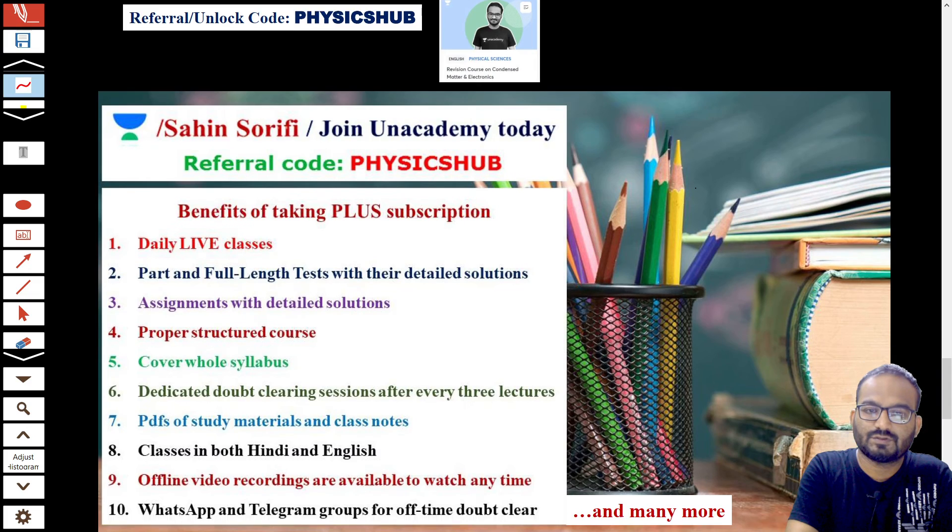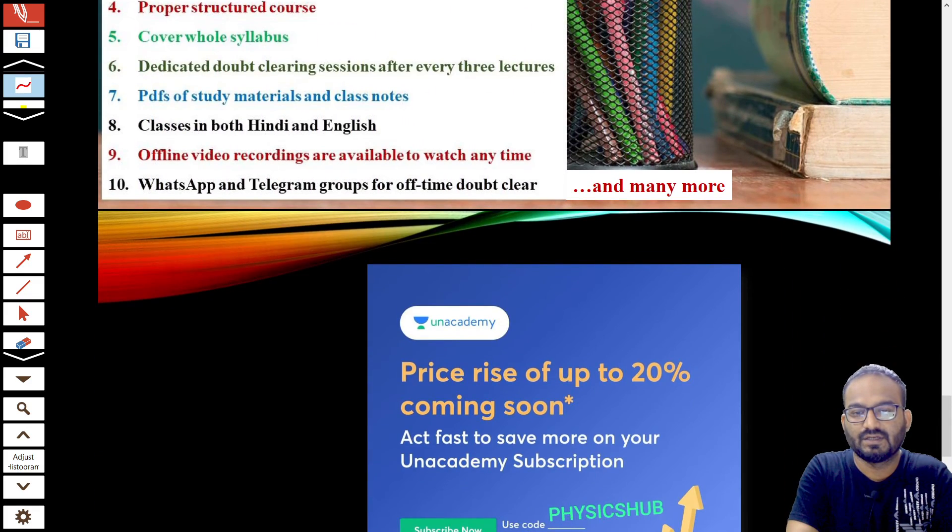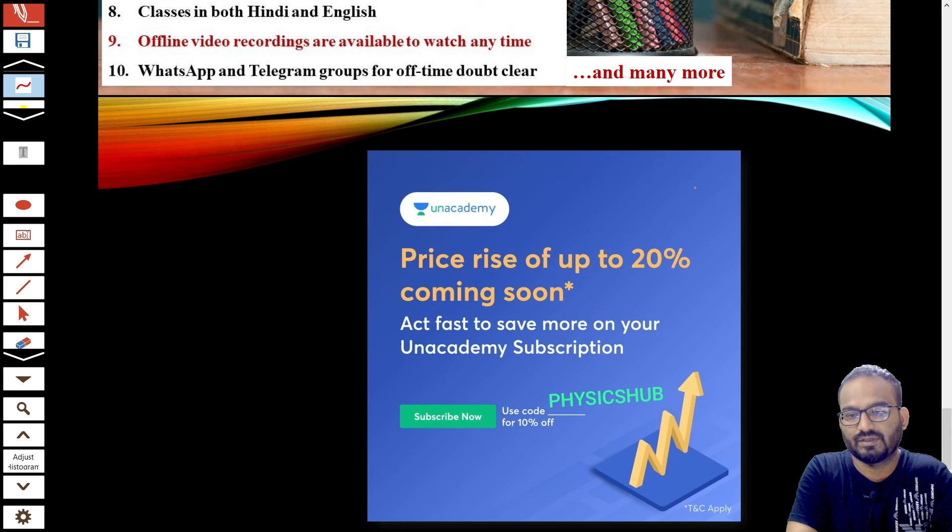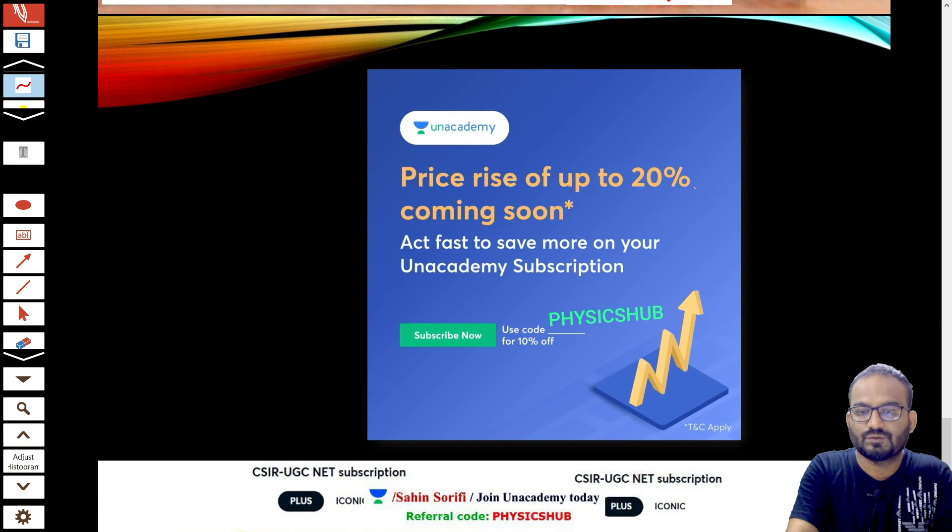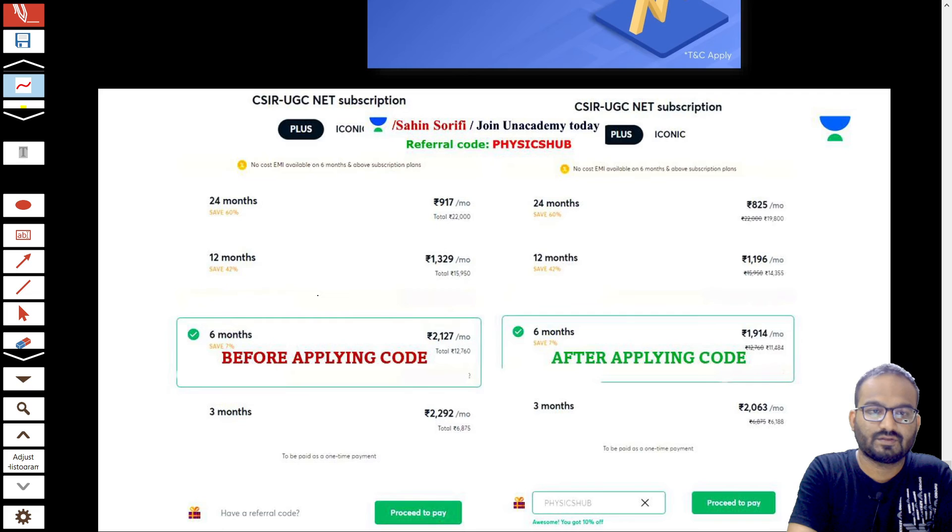You can join Unacademy Plus today. You can get a lot of benefits that are listed here. You can pause and read. This price hike will be coming soon and will be effective by the 31st. So if you're planning to take a subscription, take it today, take it as soon as possible. You can get any of the plans: 3, 6, or 12 months.